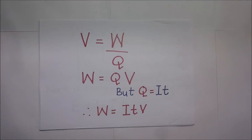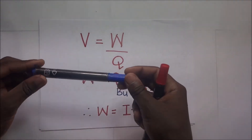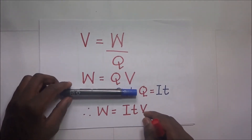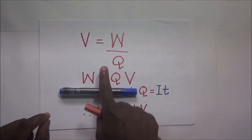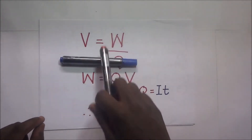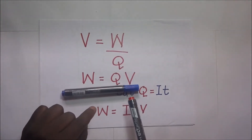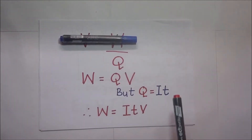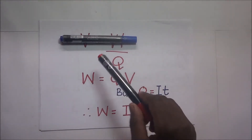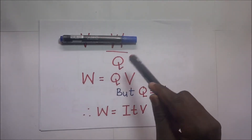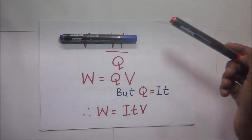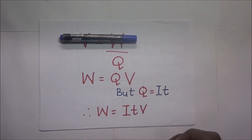When current is flowing, it is actually electrons that are flowing. If I apply a force on an object and it moves through a certain distance, we say work has been done on it. Work is done because the object has moved a certain distance because of a force that pushed it. By definition, work is the product of force acting on an object and the distance covered by that object in the direction of the force.